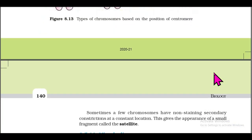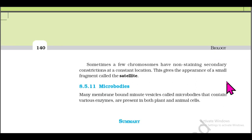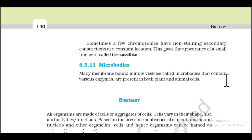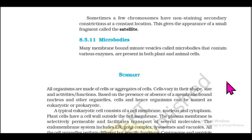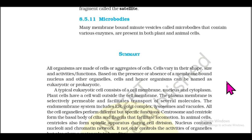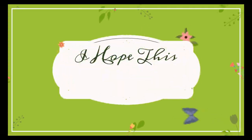Sometimes a few chromosomes have non-staining secondary constrictions at a constant location, giving the appearance of a small fragment called the satellite. Section 8.5.11: Microbodies. Many membrane-bound minute vesicles called microbodies that contain various enzymes are present in both plant and animal cells.